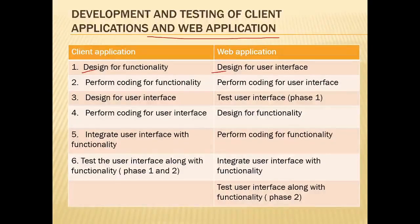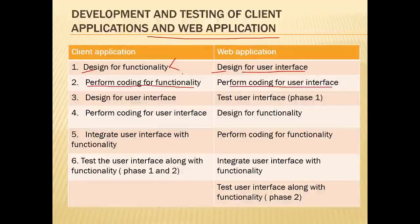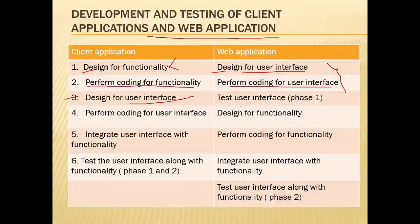In a client application, the user interface becomes available only after functionality is available — we first write the code, develop the functionality, and then design the interfaces. In a web application, we first design the user interfaces and then design the functionalities. So for client applications: first all functionalities are coded, then the interface design is done. For web applications: first all interface designs are completed and coding for the interface is written.